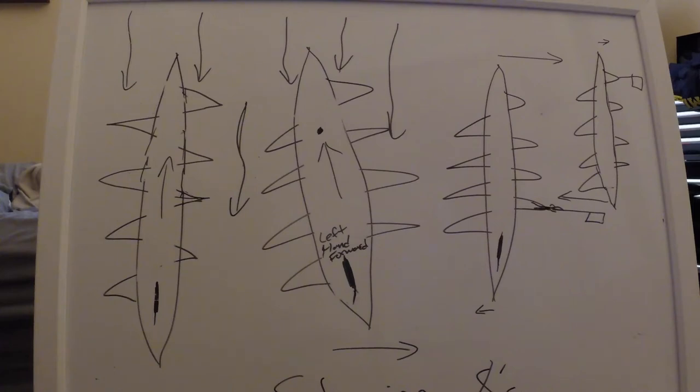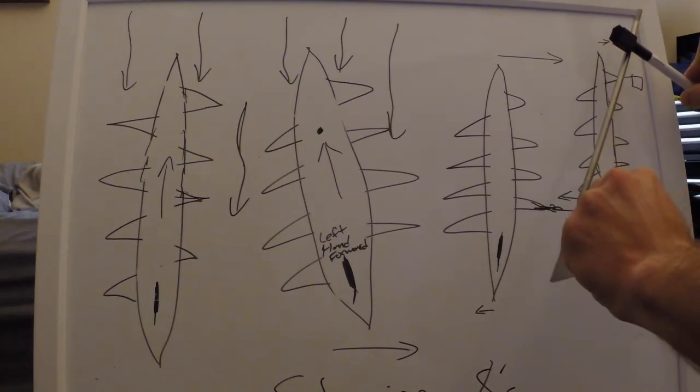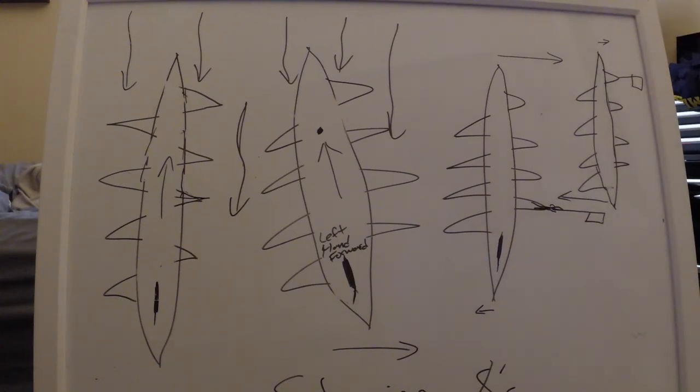If we were to have bow seat drop their blade in the water, then it would pivot about bow seat's blade. Dropping that in the water, we would see the bow go a little to the right and the stern kick out quite a bit to the left. We've got that little arrow to the right there, big arrow to the left there.